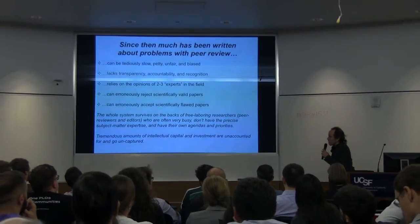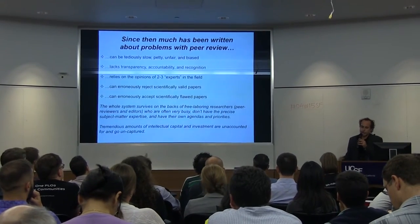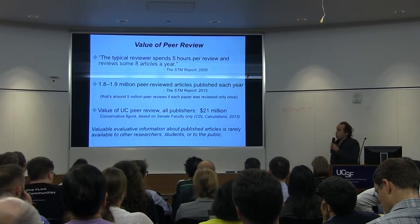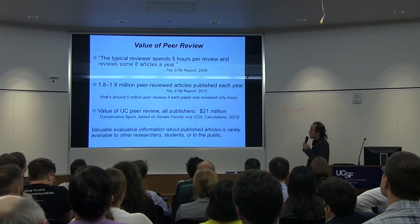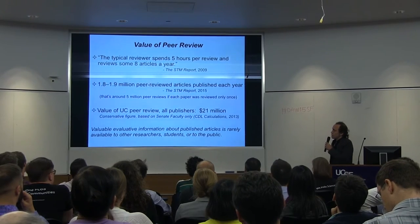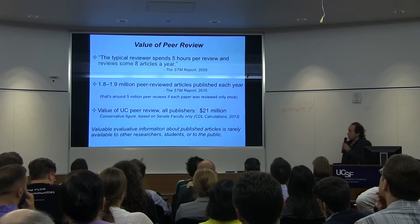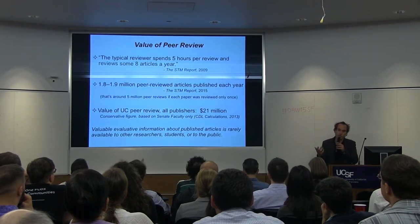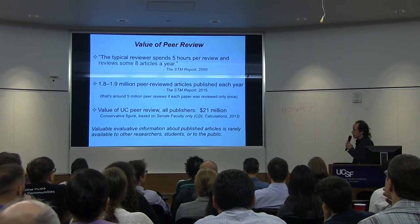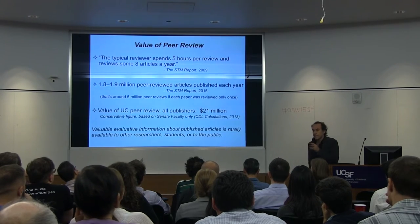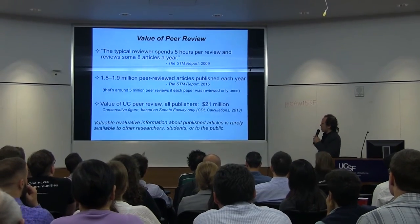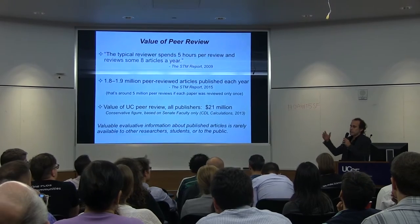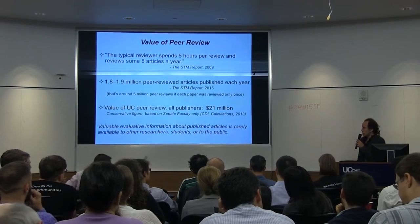The piece I want to focus on is the tremendous amount of intellectual capital and investment that goes unaccounted for and uncaptured during the peer review process. Typical reviewers spend about five hours per review, around eight articles a year — and I think that number is low for many people. Those are data from an SEO report from 2009. There are about 1.8 to 1.9 million peer-reviewed articles published every year, which works out to about five million peer-reviews if each paper were reviewed only once. We calculated back in 2013 that UC faculty contribute about 21 million dollars based on FTEs, time, and numbers of peer-reviews back to the publishing system that they never recoup.